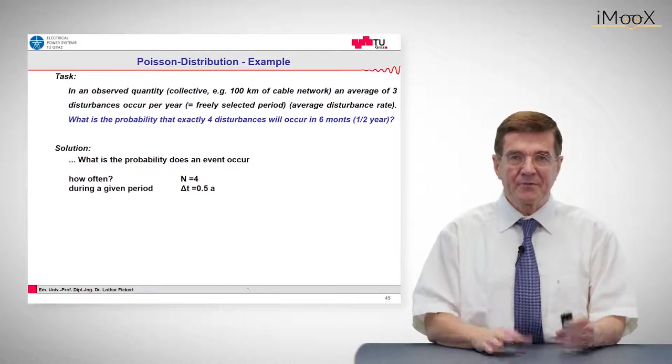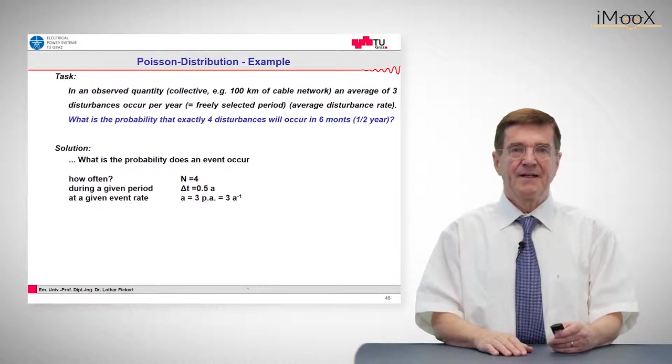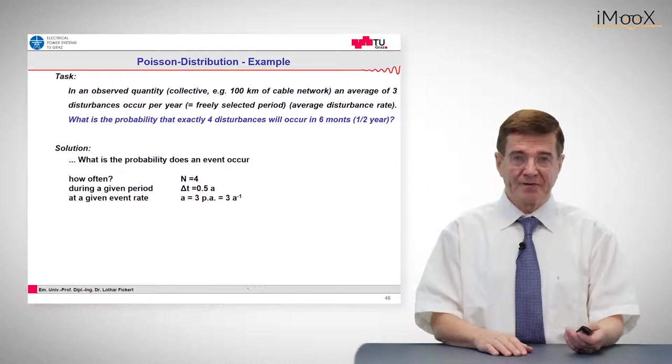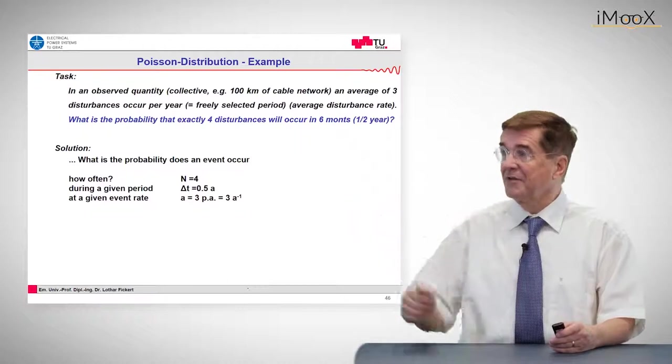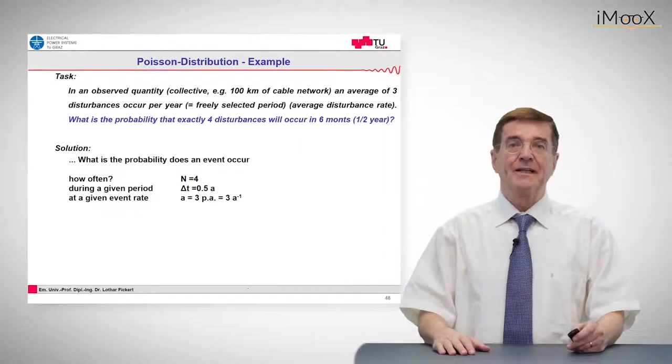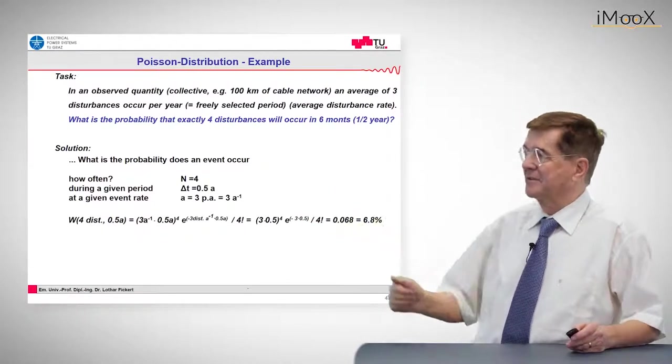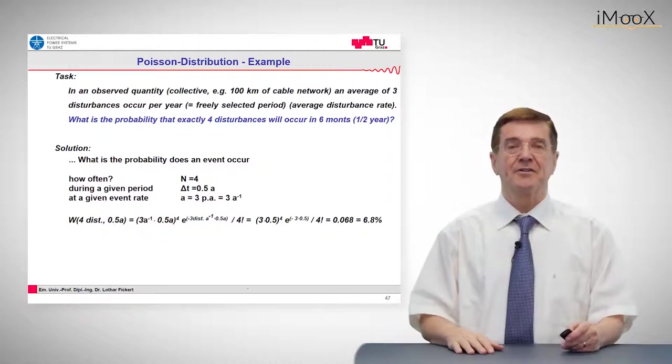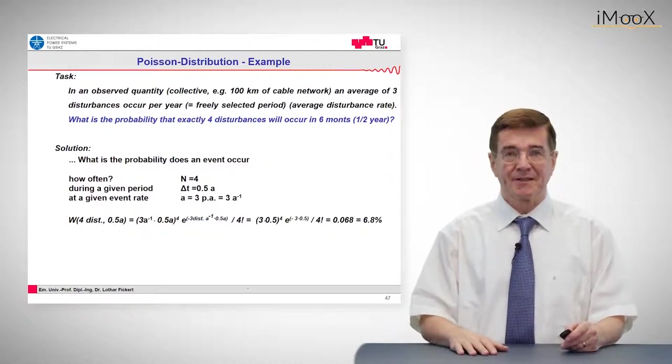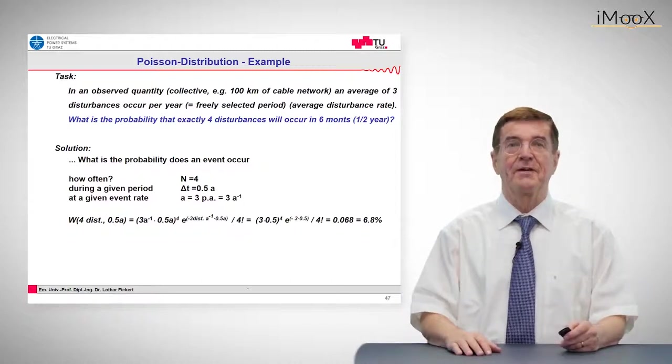What is the period in which we observe this? This is half a year. What is the given event rate? That was already stated above - it's three per year. If we insert these figures into the well-known formula, we arrive finally after some multiplications at the value of 0.068 per unit, or colloquially speaking, 6.8 percent.